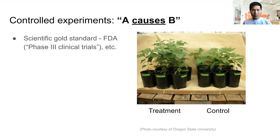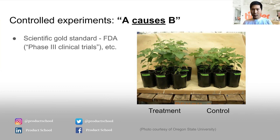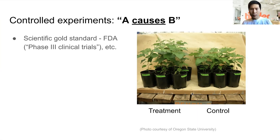Controlled experiments are the scientific gold standard. The FDA uses them with things like clinical trials to demonstrate the efficacy of drugs and vaccines. Here's a picture of a controlled experiment from Oregon State University — they applied a treatment to the plants on the left, while the plants on the right are the control and did not receive the treatment. You can see the treated plants are growing a bit better.